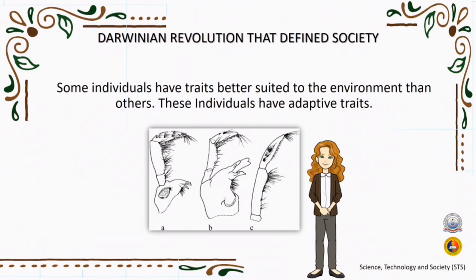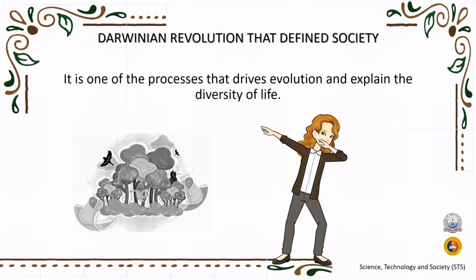Individuals with adaptive traits — traits that give them some advantage — are more likely to survive and reproduce. These individuals then pass the adaptive traits onto their offspring. Over time, these advantageous traits become more and more common in the population. Through this process of natural selection, favorable traits are transmitted through generations. Natural selection can lead to speciation, where one species gives rise to a new and distinctly different species. It is one of the processes that drives evolution and helps to explain the diversity of life on Earth.